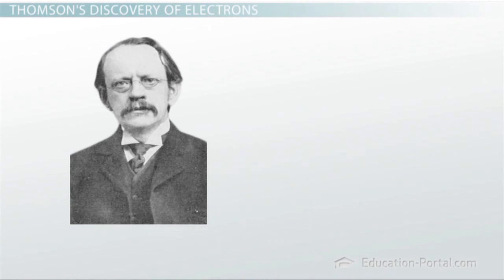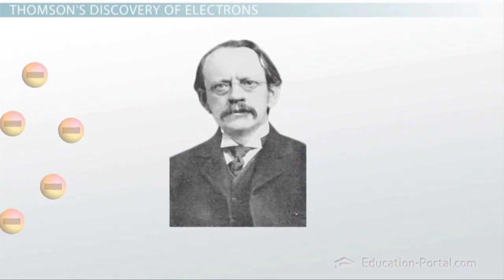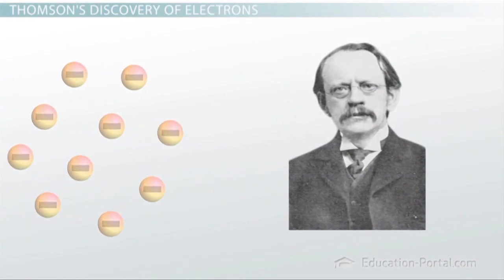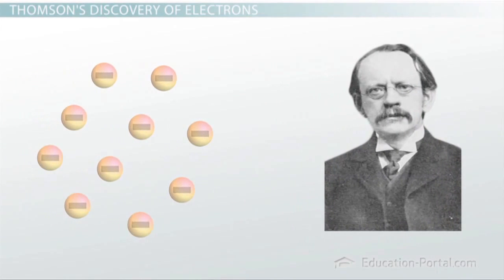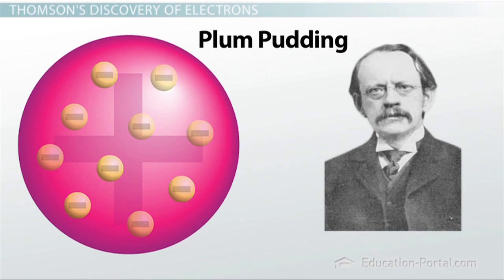Thomson went one step further and determined that these negatively charged electrons needed something positive to balance them out, so he determined that they were surrounded by positively charged material. This became known as the plum pudding model of the atom — the negatively charged plums were surrounded by positively charged pudding.